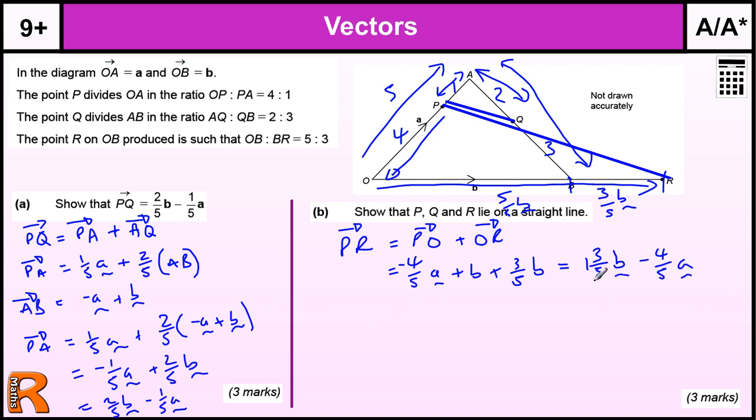Now, to prove these are parallel, we've got to show that one is a multiple of the other. So if I just change that there, let's just rub that out and change it to a top-heavy fraction, we'll probably be able to see the factor much more clearly, or the multiple more clearly. So, 8 fifths B minus 4 fifths A. I've got minus 1 fifth A. I've got times that by 4 to get 4 fifths. 4 times 2 is 8.